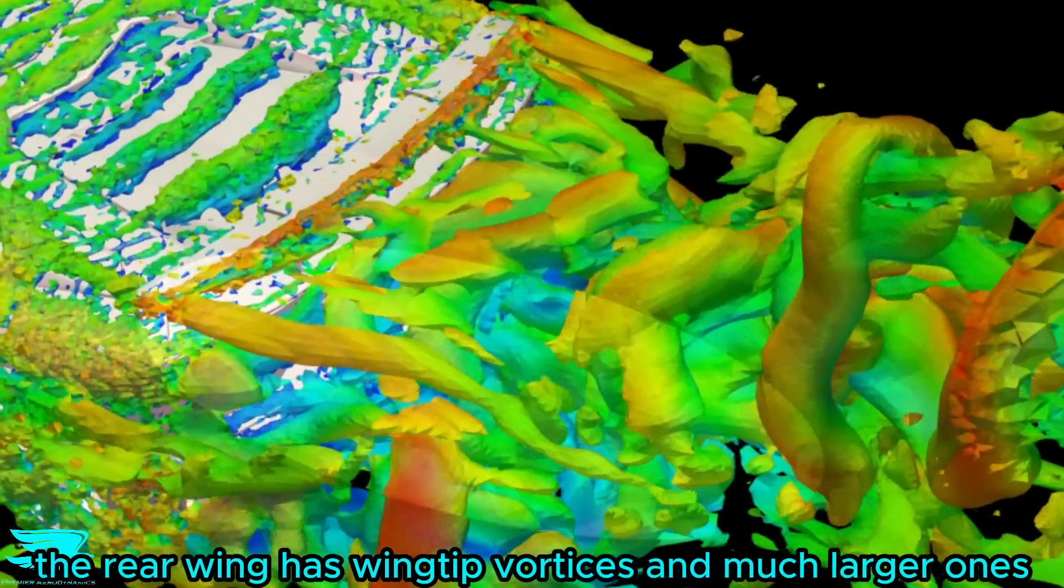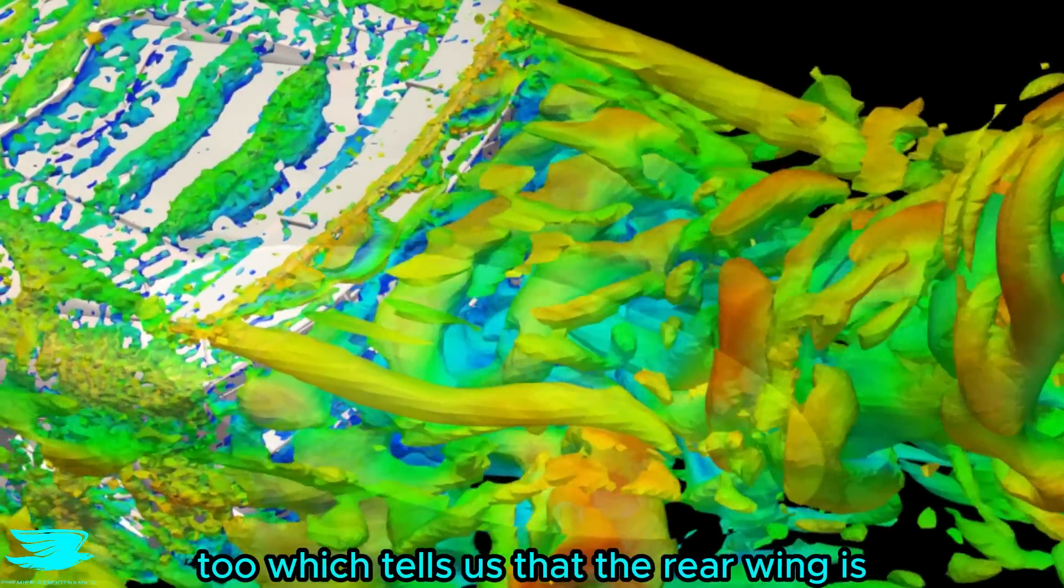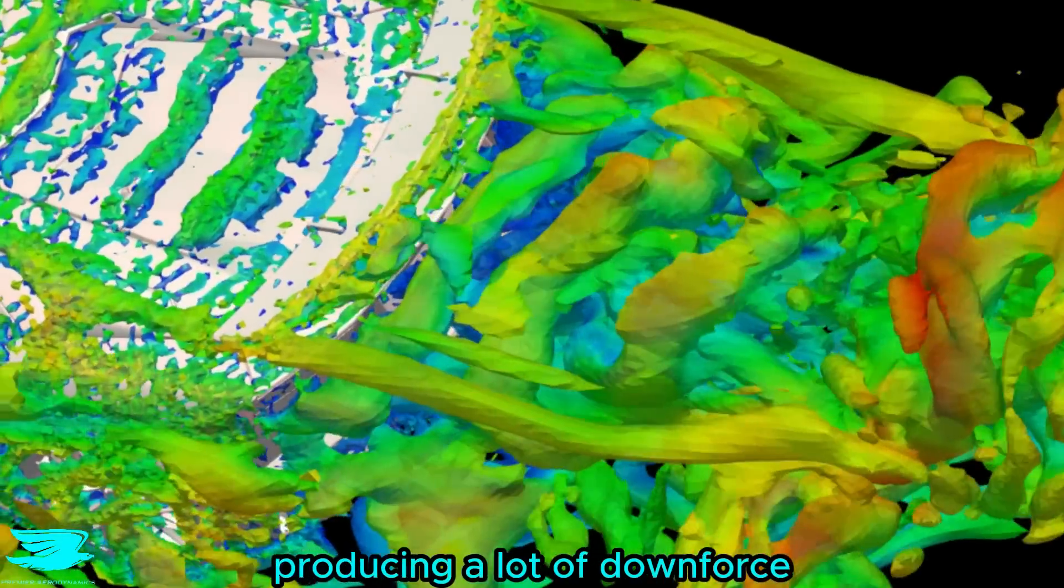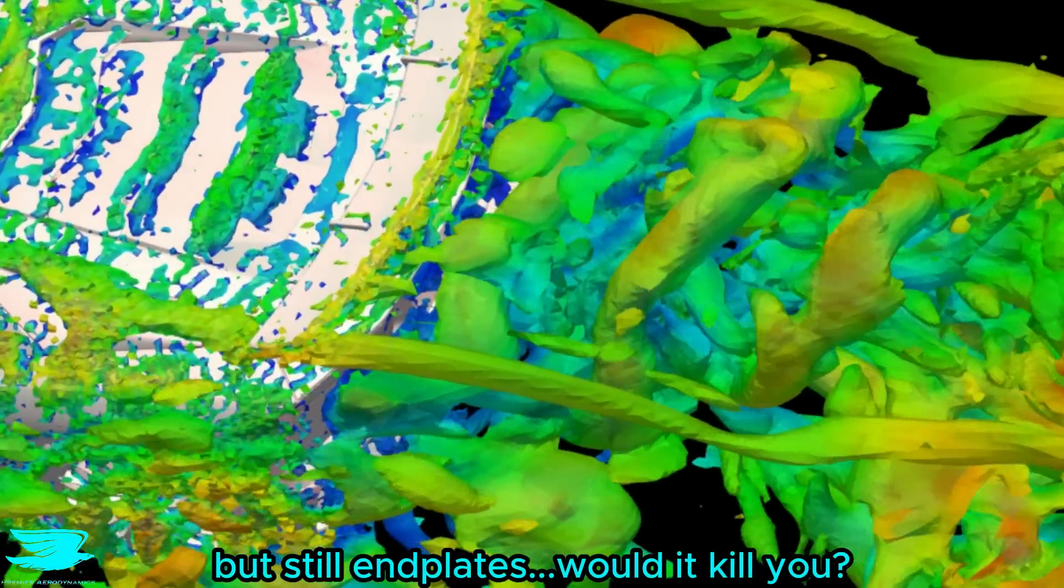Again, the rear wing has wingtip vortices and much larger ones too, which tells us that the rear wing is producing a lot of downforce, but still, end plates. Would it kill you?